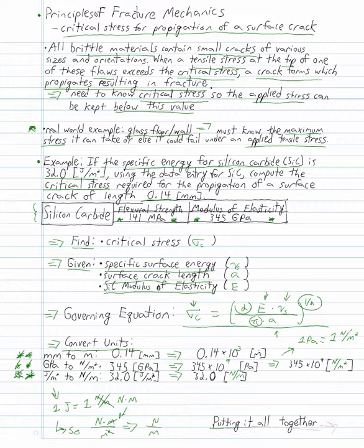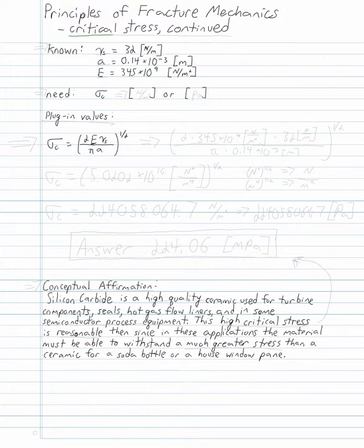Putting it all together, critical stress continued. What's known is that specific surface energy, 32 newtons per meter. The surface crack length, 0.14 times 10 to the negative third meters. And our modulus of elasticity, 345 times 10 to the ninth newtons per meter squared.